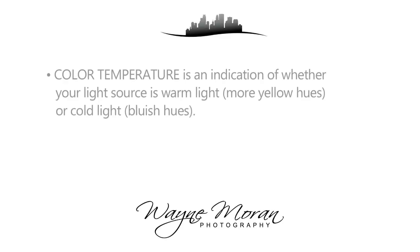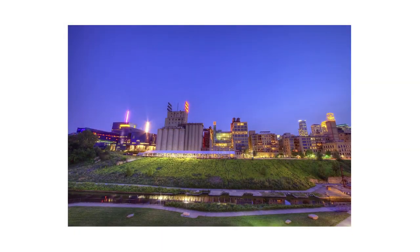When talking about the quality of light, we also need to talk about color temperature. Color temperature is an indication of whether your light source is a warm light — kind of a yellow tone — or a cold light, which is a bluish tone. We can break all this down technically, but we'll save it for another lesson. Here's an example of cold light.